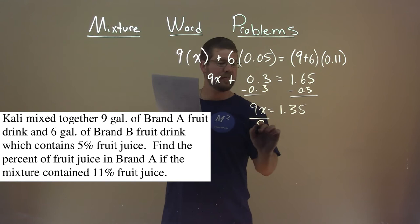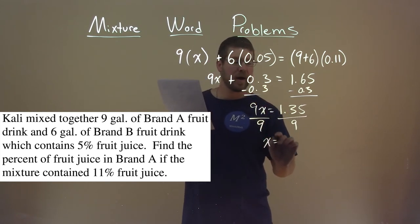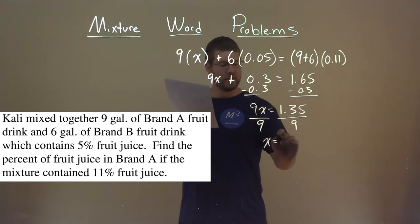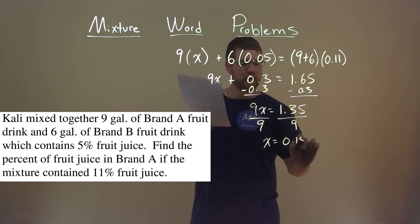Divide both sides by 9 here, and X is by itself, and 1.35 divided by 9 is a 0.15.